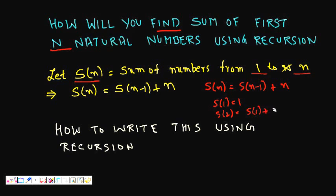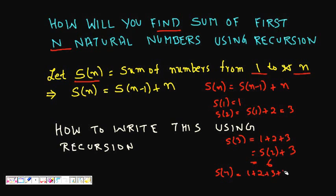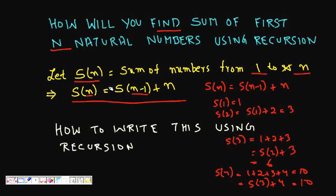For example: S(1) is 1; S(2) is S(1) plus 2, which is 3; S(3) is S(2) plus 3, which is 6; S(4) is S(3) plus 4, which is 10. This is a recursive formula because the same function appears but with a different argument — n versus n minus 1 — relating S(n) to S(n-1).